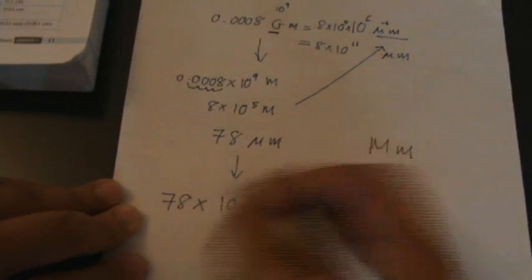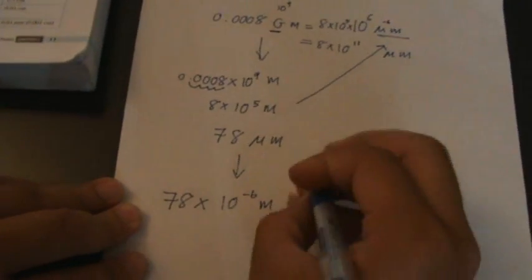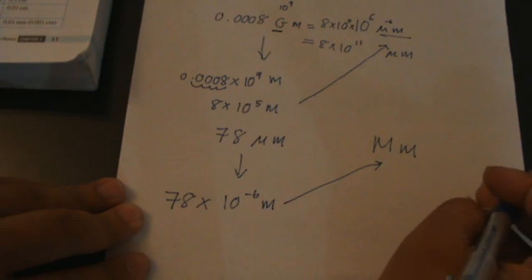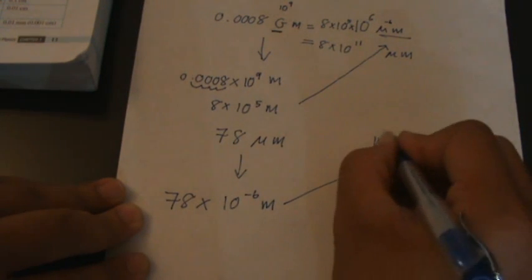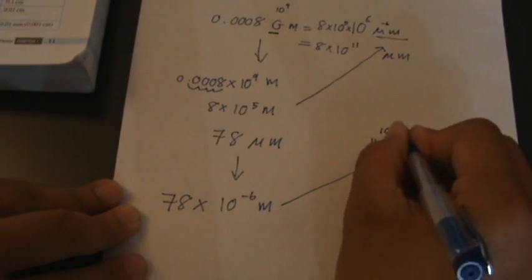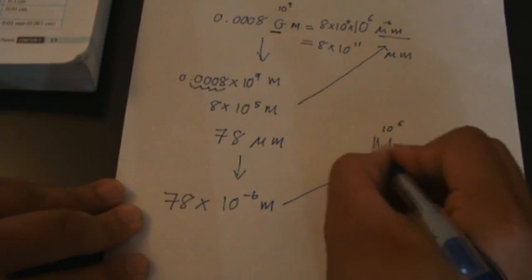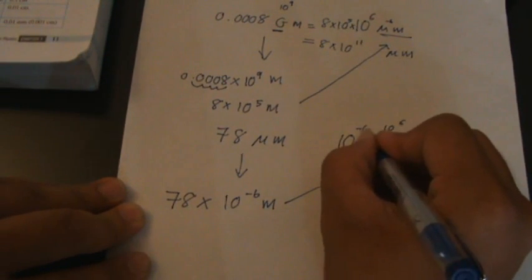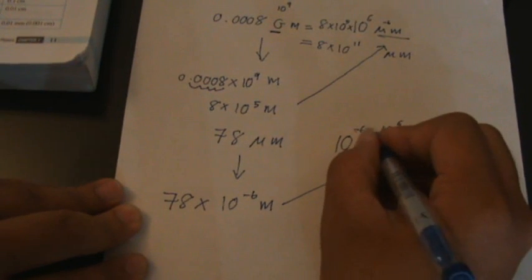Okay, I want to convert to megameter. This mega is 10 power of 6. In front of mega, I must make an empty mega, which is 10 power of negative 6.